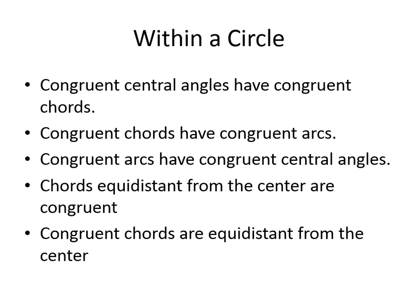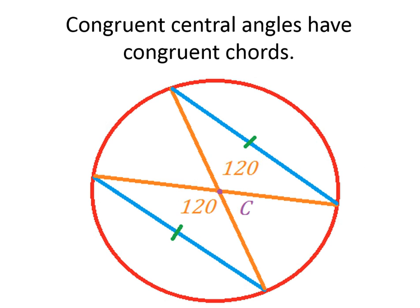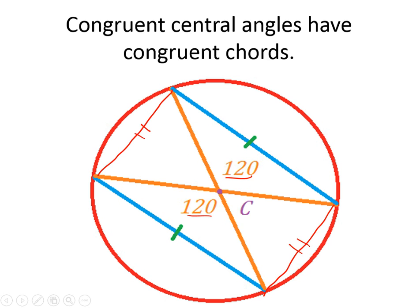We're going to look at each one with an image. The first one: congruent central angles have congruent chords. If you draw two central angles — here we have central angles of 120 degrees each — and then from the endpoints of those angles you draw a chord, which is this blue one, that distance will always be congruent. That length will be the same. So if I go from here across, and here across, these two are going to be congruent to each other. That's what it means by congruent central angles — that middle angle means you'll have congruent chords from the endpoints.